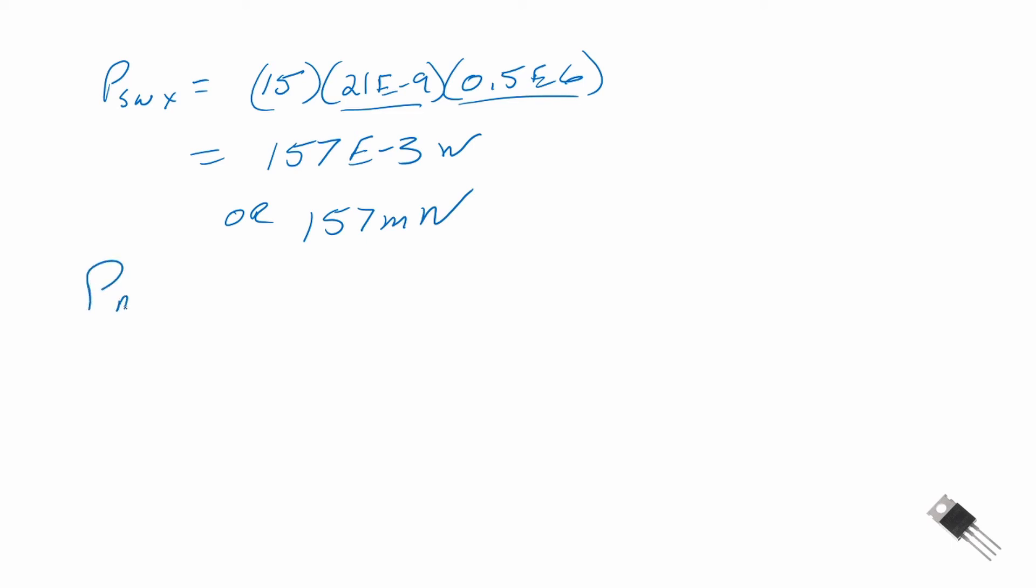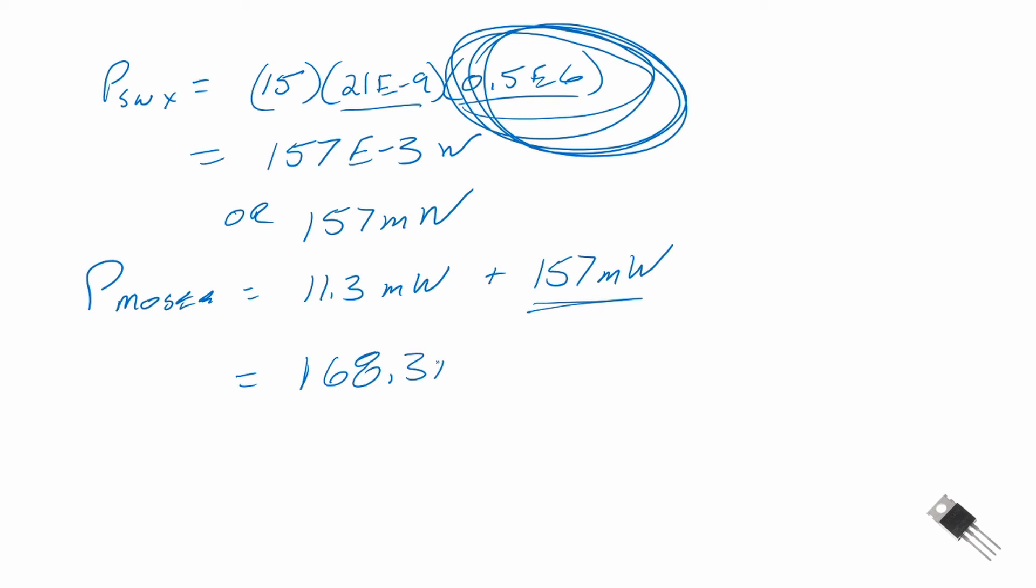So the total loss for our MOSFET was equal to the 11.3 milliwatts from conduction (relatively small) plus 157 milliwatts for our switching loss. One way we can always reduce the switching loss is by changing and reducing our switching frequency. If we decrease our switching frequency by a half, our switching loss will also decrease by one-half. But let's add these up - that is equal to 168.3 milliwatts.